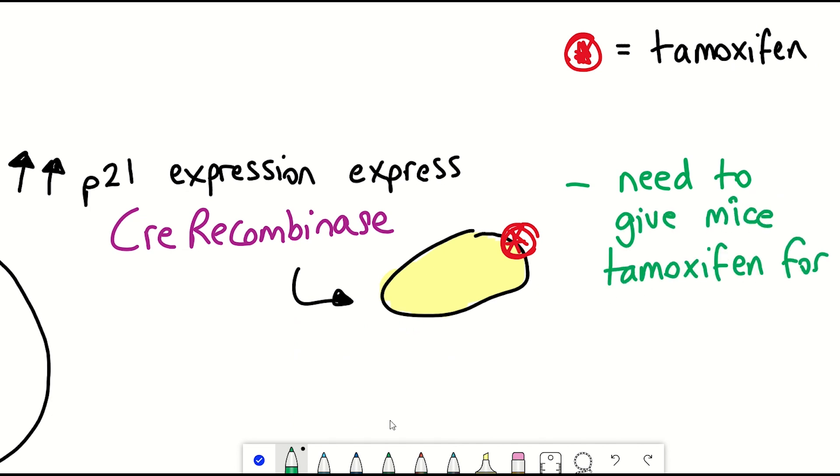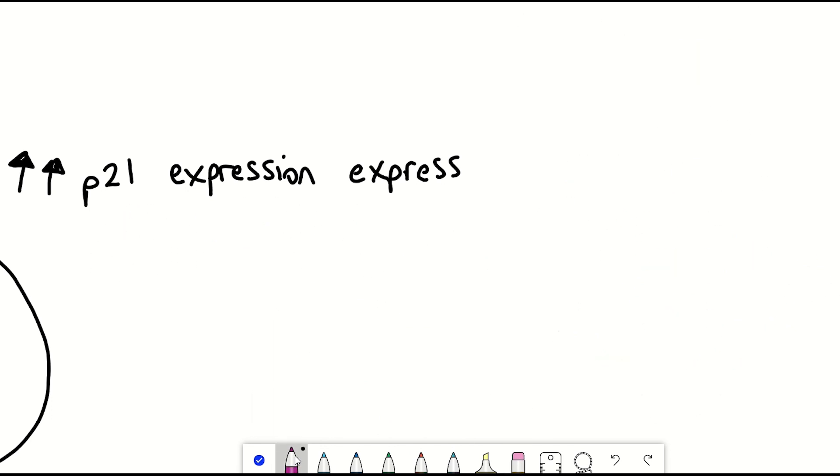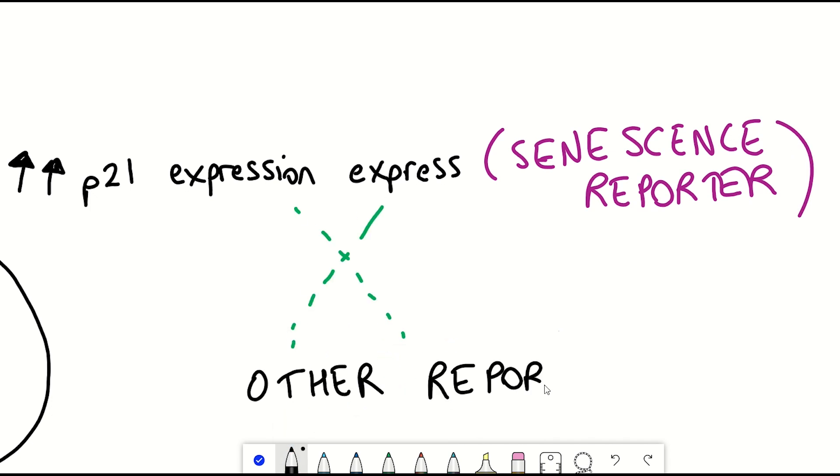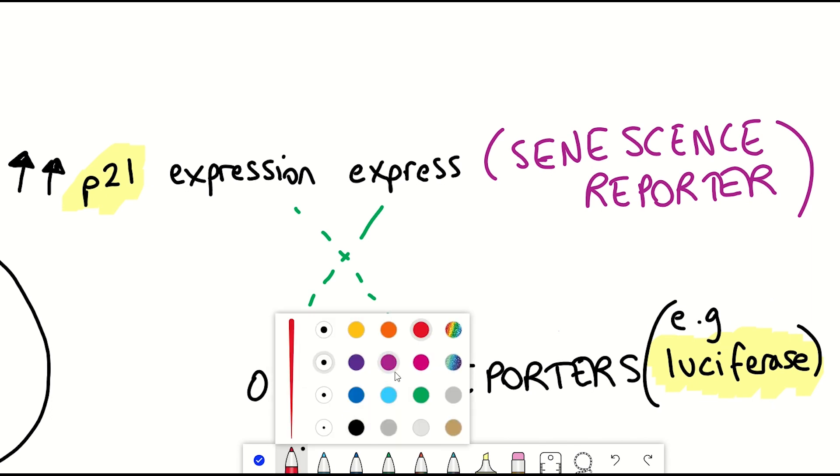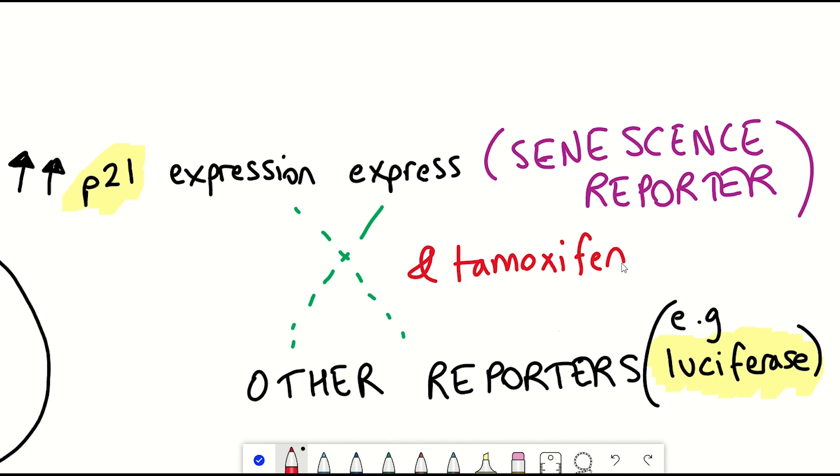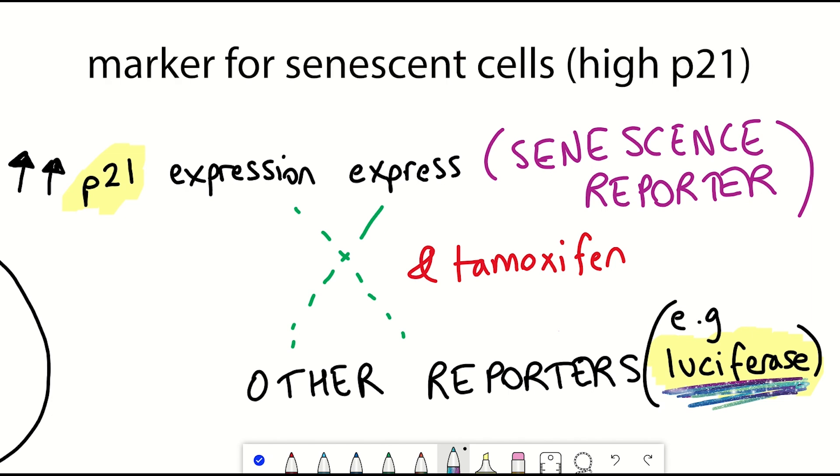Now, it doesn't really matter if you don't entirely understand what that means. But what you need to understand is that it basically enables the researchers to combine the senescence reporter with other types of reporter mice to further characterize these high-expressing P21 cells. So the first thing they were interested in was trying to see where the senescent cells accumulate. And so they combined their P21 mouse model with a luciferase mouse, such that only luciferase is being expressed in high P21 cells if the mice are treated with tamoxifen. And so luciferase acts as a marker to be able to see where these high P21 cells are.